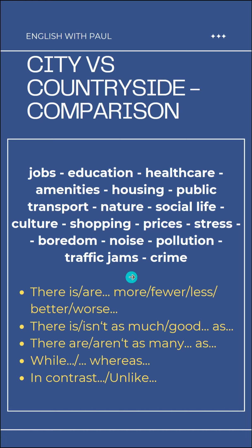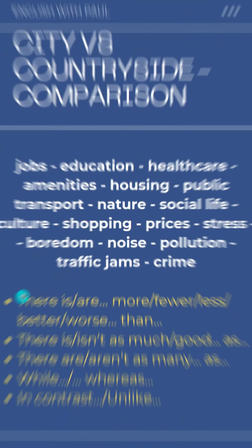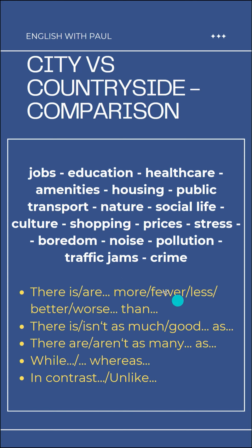Time to compare the city and the countryside. Here is a list of categories you can use to compare these two worlds. Be specific. When you talk about education, mention the kindergarten, schools, universities. By amenities we mean fancy restaurants, swimming pools, playgrounds and so on. Public transport includes all the buses, trams, trains, taxis. By culture we mean museums, libraries, theatres, cinemas, concert halls. And when you talk about shopping, mention department stores, shopping centres, supermarkets, grocery stores, markets and so on.